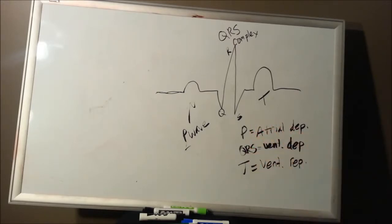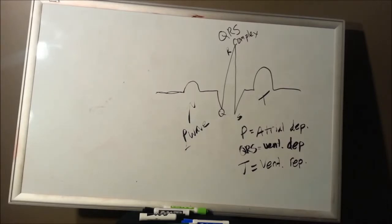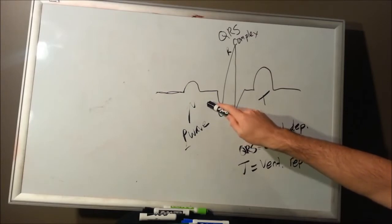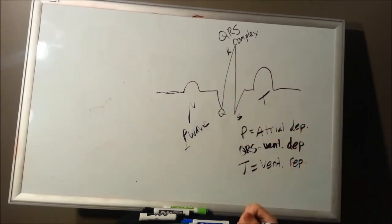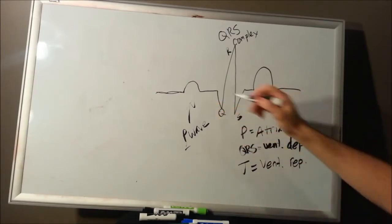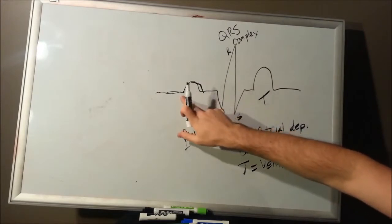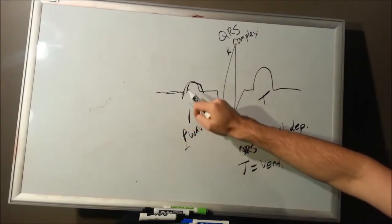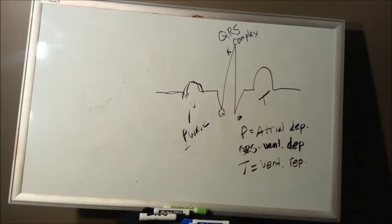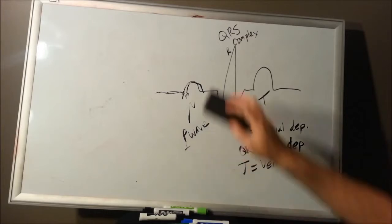Another key point: electrical signals always precede mechanical signals. Your EKG follows the electrical tracings of the heart. When the SA node depolarizes, it sends an action potential through the atria — that electrical pulse causes a mechanical pulse, causing your muscle cells to contract. But the EKG picks up the electrical signal first, which always slightly precedes the mechanical contraction.